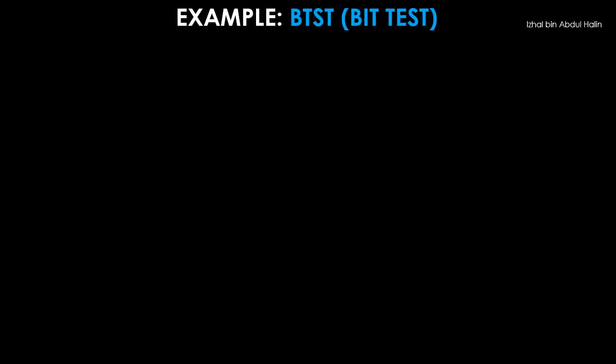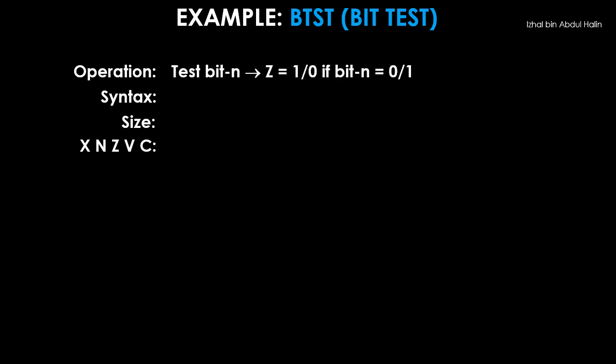Let's look at another instruction. The BTST or bit test instruction is used to check the value of a particular bit. The Z flag is set to 1 if the bit tested is 0. The Z flag is reset to 0 if the bit tested is 1. That's all that this instruction does. There are two ways you could write this instruction shown in the general syntax.